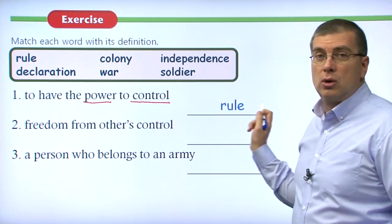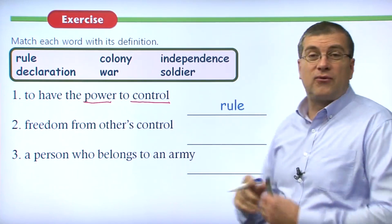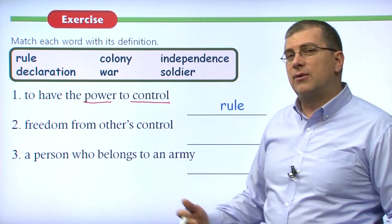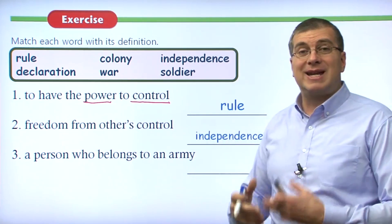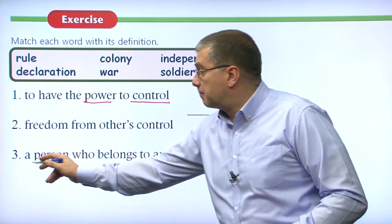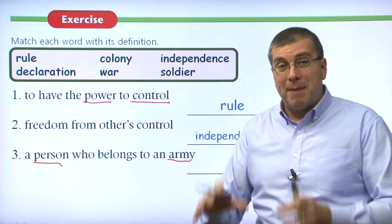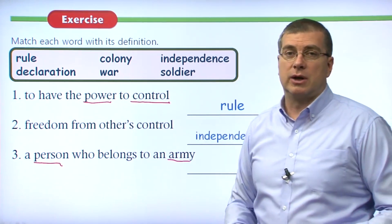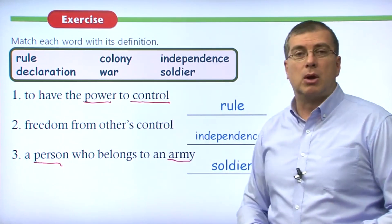To have the power to control — that is 'to rule.' They are ruling. Number two — freedom from others' control. If you want freedom from somebody's rule, you are looking for independence. You want freedom from somebody else's control. Number three — a person who belongs to an army. There are many people that make up an army and they fight in battles during a war. They are, of course, soldiers.